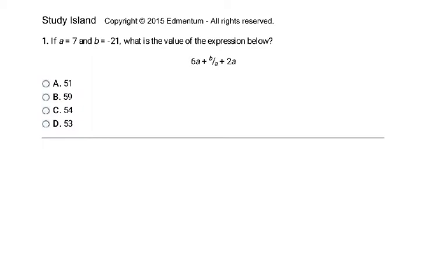Here is our first problem. If A equals 7 and B equals negative 21, what is the value of the expression below? Well, simply they're just telling you that in this expression, this A right here and here, and then the B right there is going to be replaced with numbers. The A is going to be replaced with the 7, and the B is going to be replaced with the negative 21.